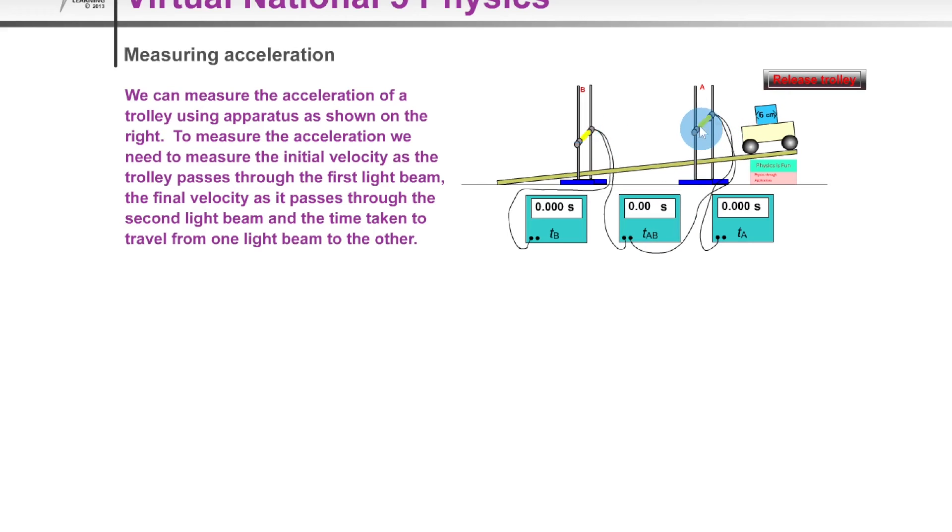Whereas timer A is simply going to measure the time taken for the cards to cut through light gate A, i.e. from the front to the back of the card. And timer B is going to measure the time taken for the cards to cut through light gate B, again from the front to the back of the card. So if I click release trolley here, you'll see the timers display values.